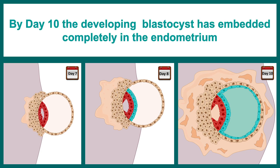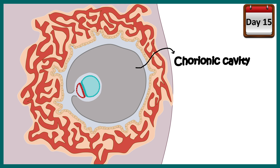This is about the end of the second week of human gestation. At this point of time, the blastocyst is implanted into the uterine wall. At around day 15, you can see a distinct chorionic cavity. Here is the primitive stalk, and you can see the embryo is hanging through the primitive stalk.